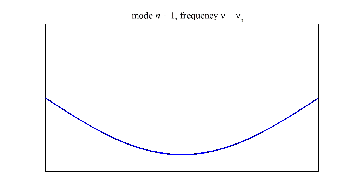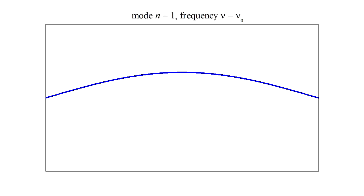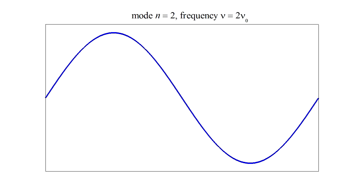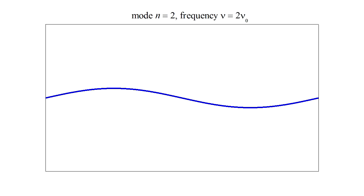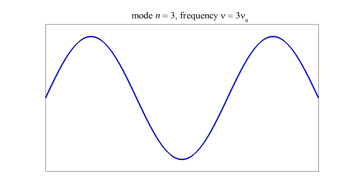In between it can oscillate with a single bump at a certain frequency. It can also oscillate with a two-bump shape at twice the single bump frequency, or with a three-bump shape at three times the frequency, and so on.